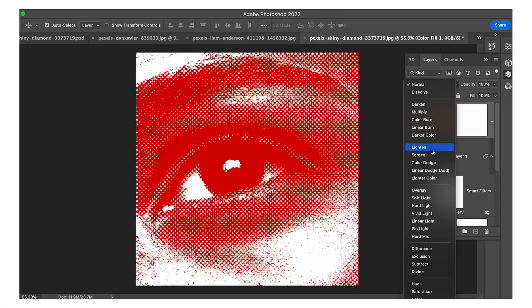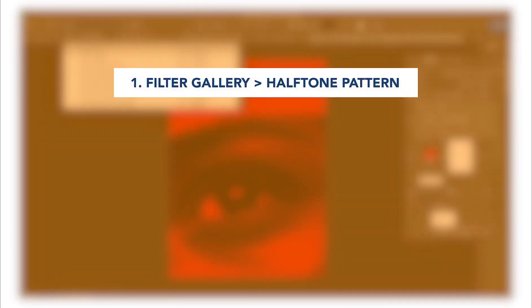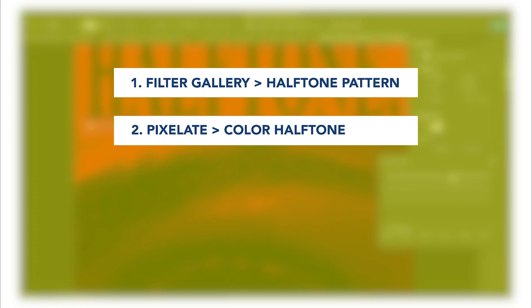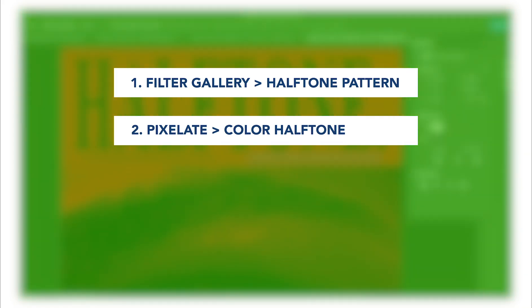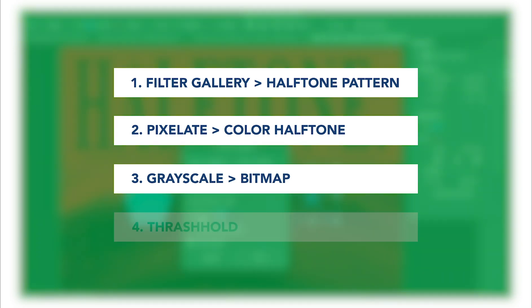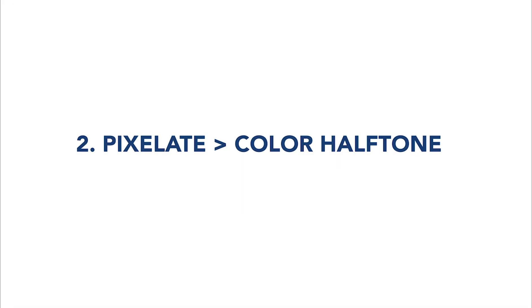As mentioned in my previous tutorial, there are four different ways to create halftone effects in Photoshop. The first is using the filter gallery halftone pattern option, the second is using the pixelate color halftone option, the third is using the bitmap, and the last one is using the threshold technique. In the next two videos we can understand pixelate color halftone in more depth, and I'm going to create four different designs.